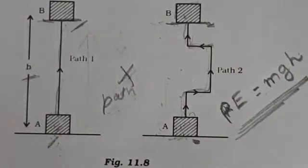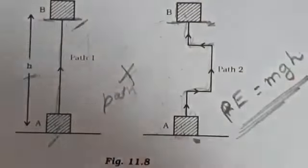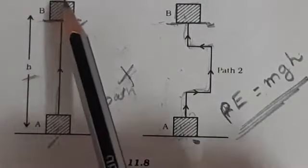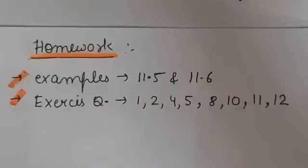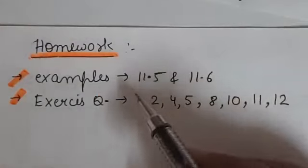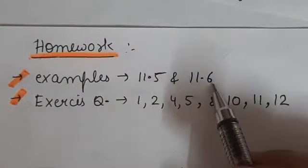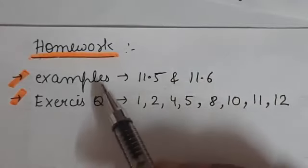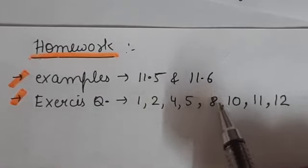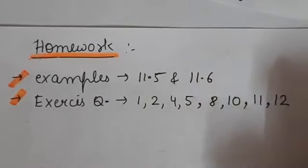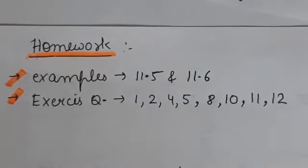So this was all about potential energy: its definition, its derivation, and the third point — that it does not depend upon the path followed; it only depends upon the difference in the vertical heights of the initial and final position of the object. Your homework is to solve examples 11.5 and 11.6 from your NCERT book, along with exercise questions 1, 2, 4, 5, 8, 10, 11, and 12. These questions are based on work done, kinetic energy, and potential energy.